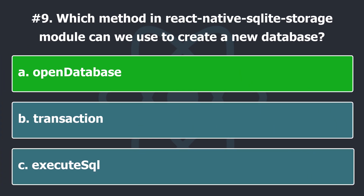Using the open database method, a database file with a defined name and location is searched. If the database file with that specification is found, it opens. And if it's not found, it opens after creation.